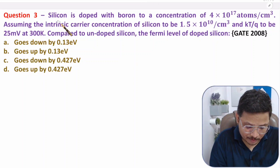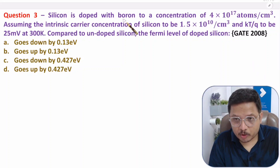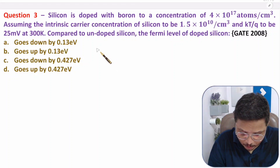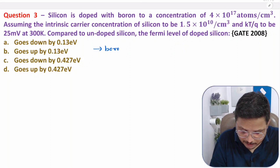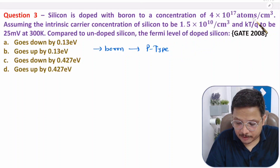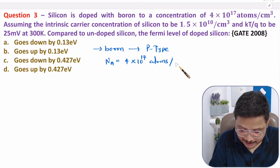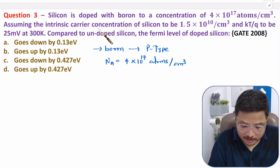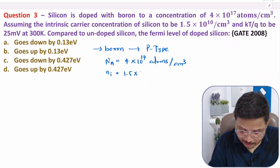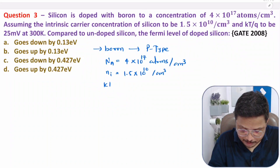Now let us move to the third interesting question. Silicon is doped with boron — boron is an acceptor (p-type) impurity, so by adding boron we make a p-type semiconductor material. The boron concentration (acceptor concentration Na) is given as 4×10¹⁷ atoms/cm³. The intrinsic carrier concentration of silicon ni = 1.5×10¹⁰ /cm³, and kT/q = 25 mV at 300 K.